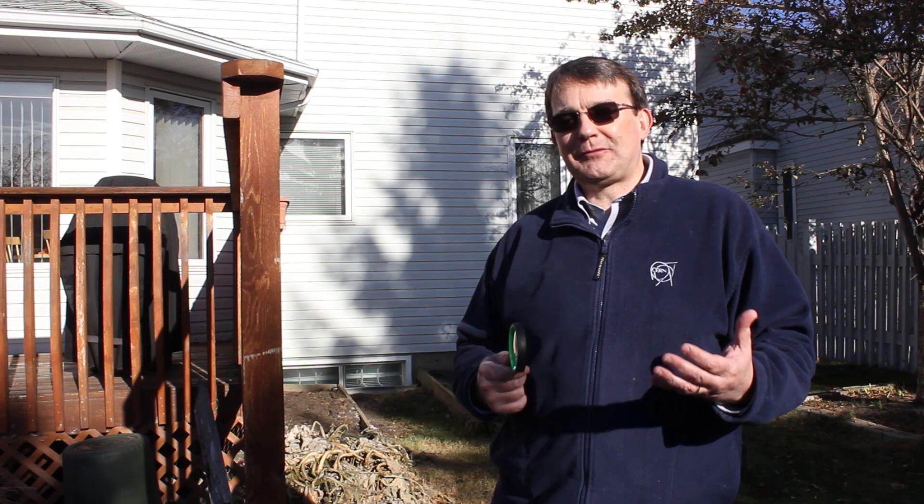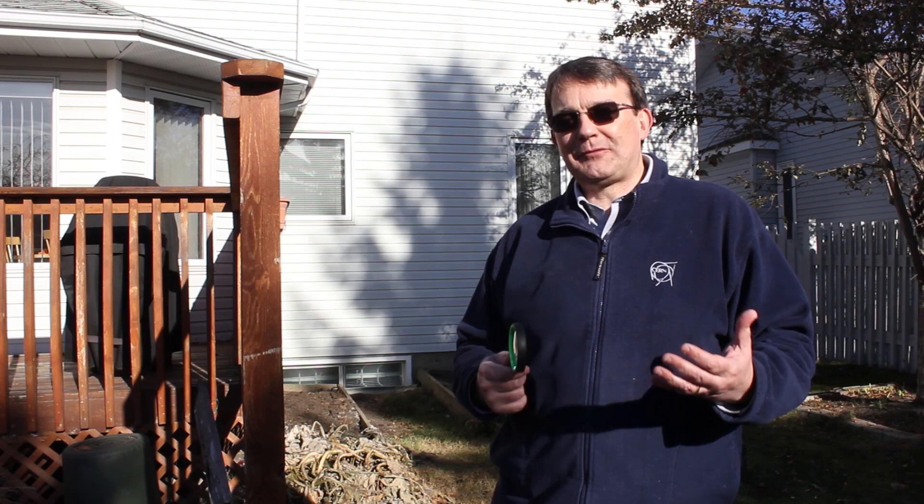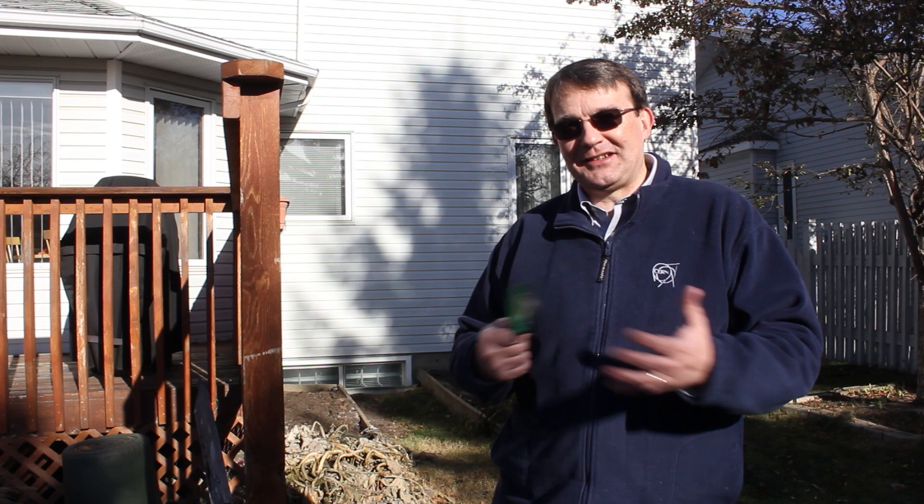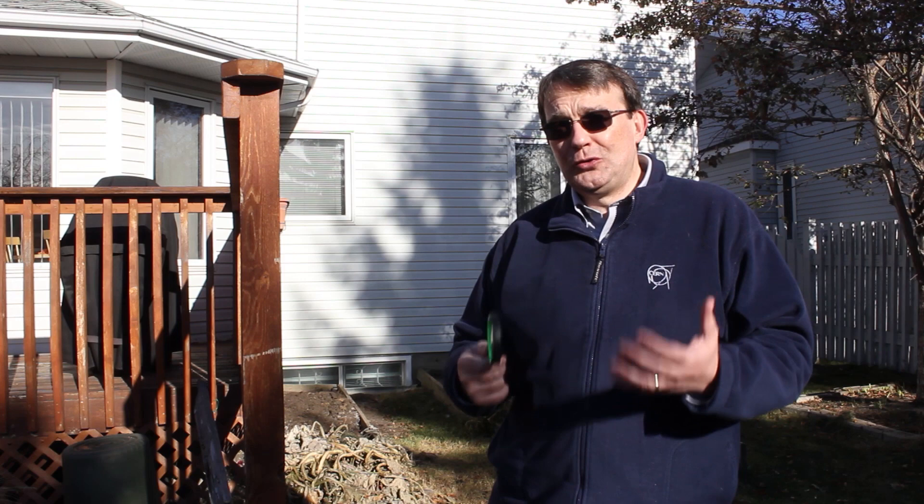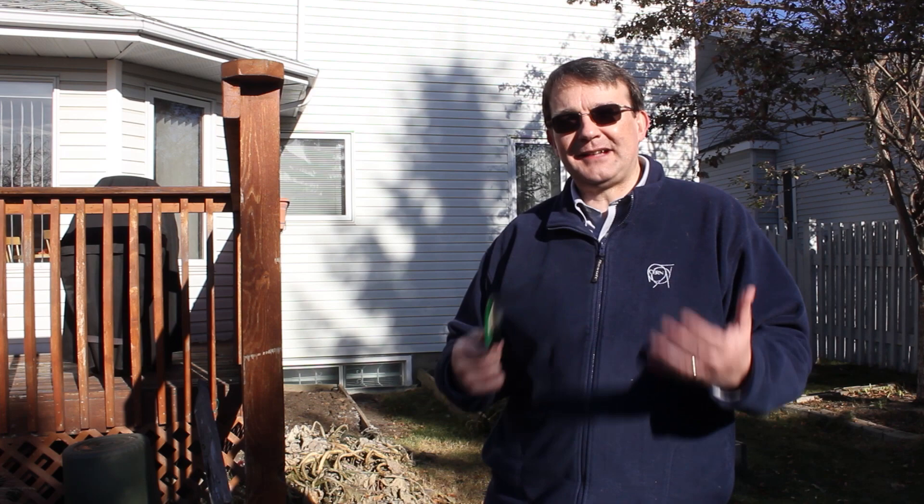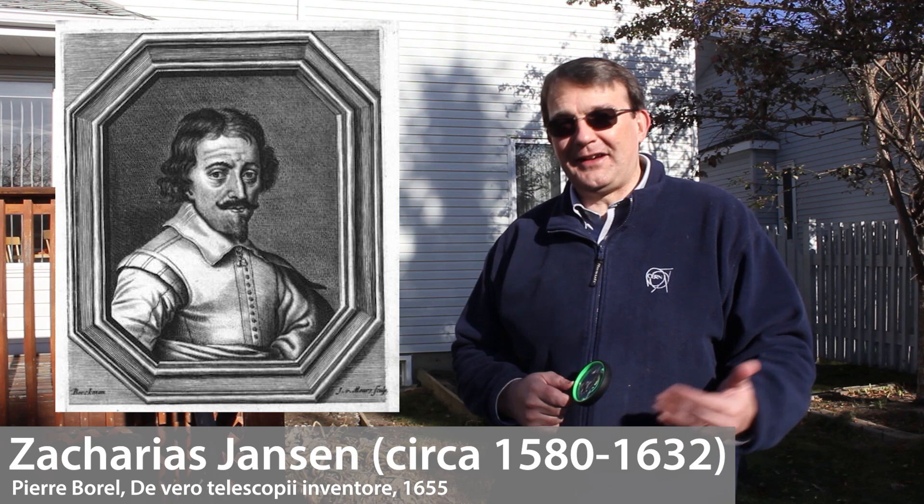The compound microscope came out of late 16th, early 17th century Holland, around the early 1600s to late 1500s, and it seemed to arise in the spectacle making trade there. We don't exactly know who invented the microscope. The name commonly associated with it is Zacharias Jansen, but the claim that he invented it was not made by him but rather his son after he died. The claim was that he invented it in 1590.